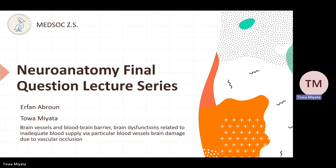Hi everyone. Welcome to the MedZox Neural Anatomy Lecture Series, where we talk about what you should know before going to the anatomy final. My name is Toa and our topic for this lecture is brain vessels and blood-brain barrier, brain dysfunctions related to inadequate blood supply via particular blood vessels, brain damage due to vascular occlusion — in other words, stroke. I'll be discussing the basic anatomy of brain vessels and blood-brain barrier, and my friend Irfan will guide you through what happens if things go wrong with those vessels.